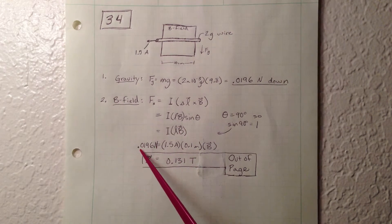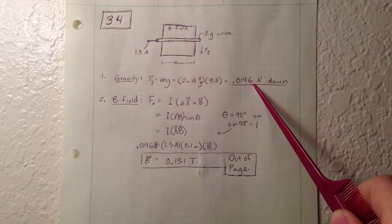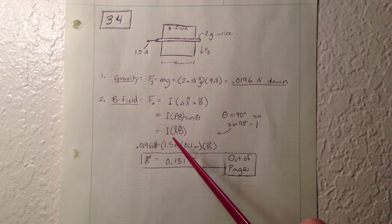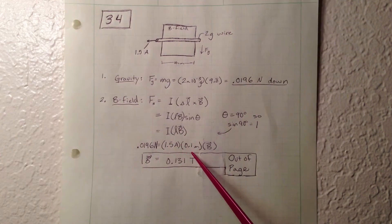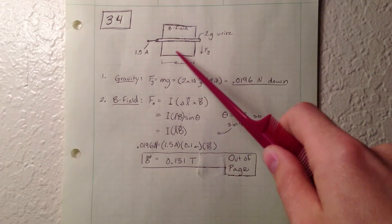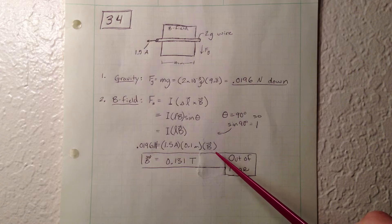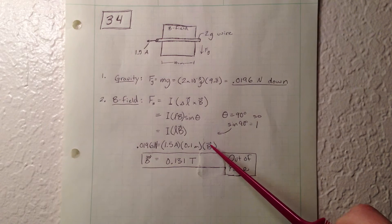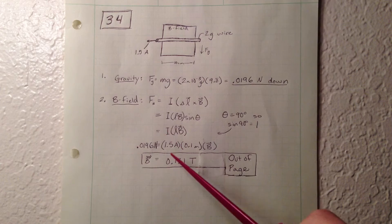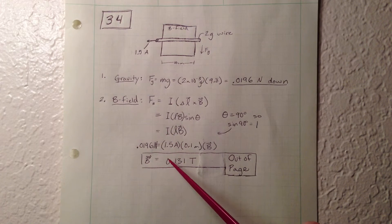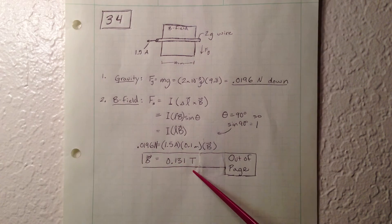And that's what we do here. I set the magnitude equal to this magnitude of the gravity. We have the 1.5 amps, 0.1 meters. Remember to change it to meters because that's the accepted units. And multiplied by the B field. So I did a little algebra, and the B field ends up being 0.131 teslas.